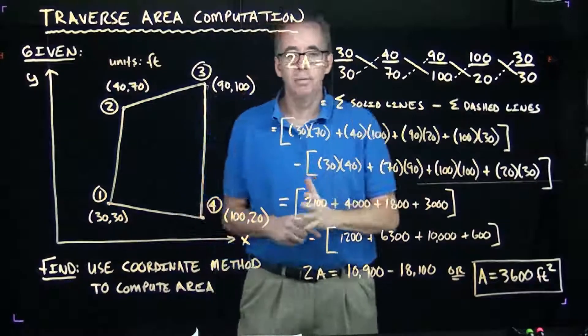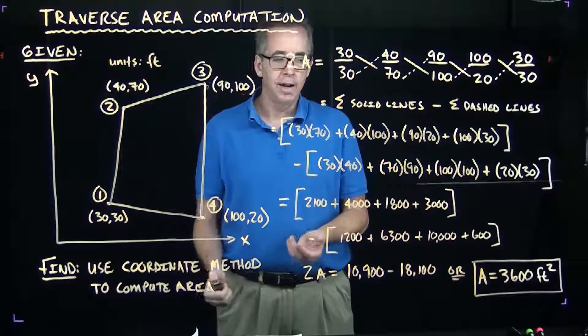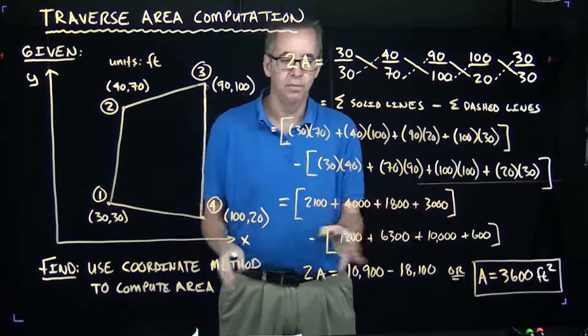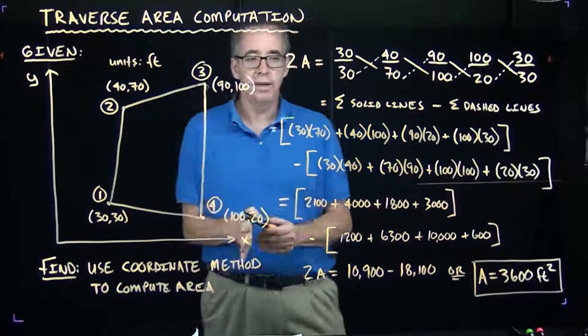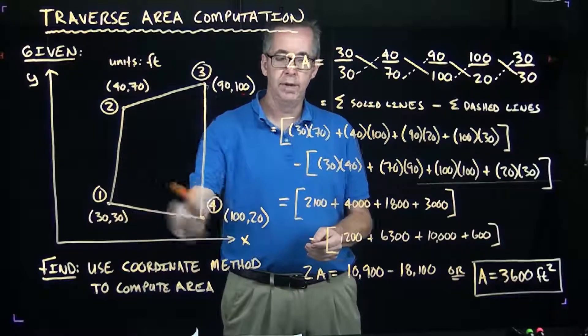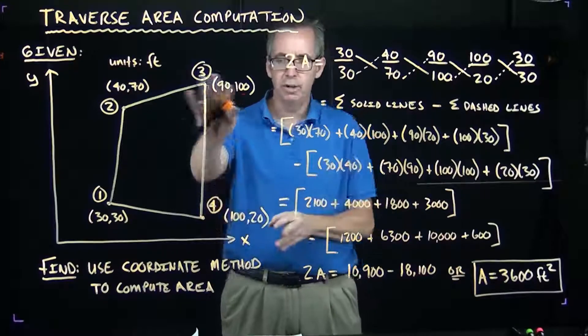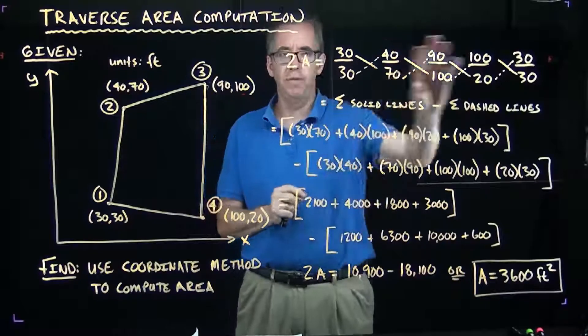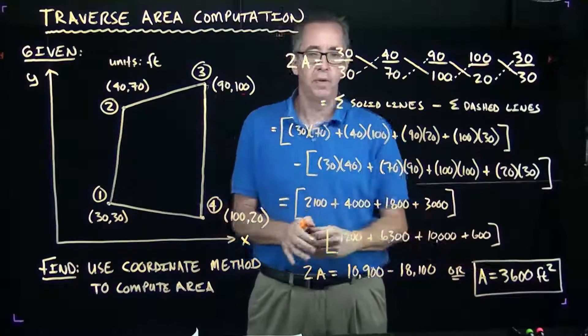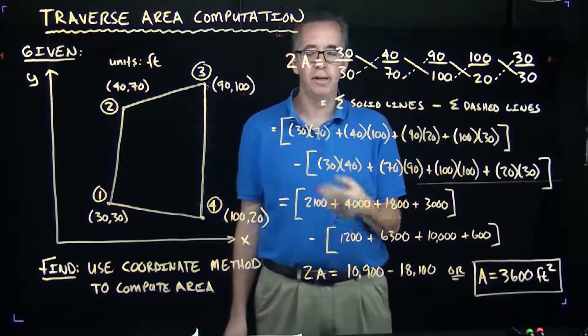This is a really simple technique for calculating the area within the traverse. A lot of times, if you look at property surveys, you're not necessarily going to always have right angles and squares and rectangles and perfect triangles. So, this is a really useful technique because once you can survey the boundary and get those coordinates, either with a GPS unit or using a total station setup where you're shooting distances and angles, however you get those coordinates, once you have these coordinates, it's a straightforward technique for calculating the area. And our final result, when we sum up all the solid lines and the dashed lines, we ended up with 3,600 square feet. That concludes this example of computing traverse area using the coordinate method.